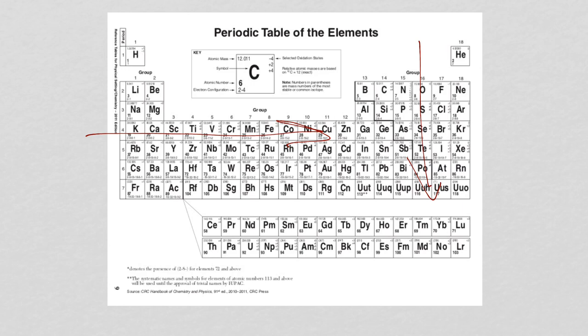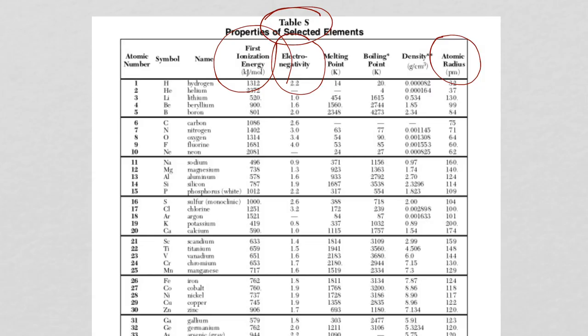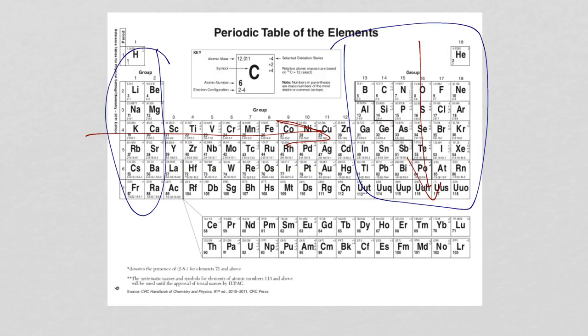When we're dealing with trends, though, let me tell you, we are dealing with the group one and twos and then 13 through 18. That's where we look at trends, not the middle of the table. So don't forget reference table S. This is vital. While we're on the subject, reference table S also gives us physical properties for elements. Notice we have the atomic number with the symbol and the name spelled correctly for the elements.